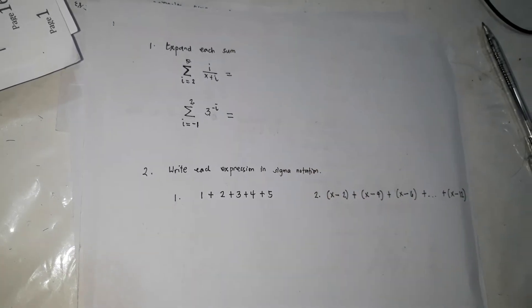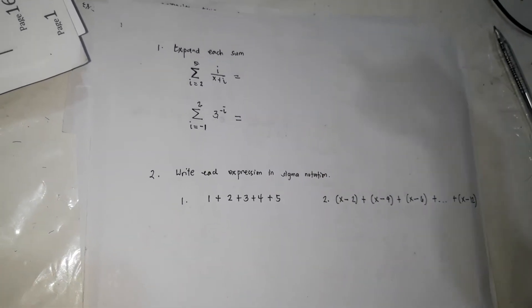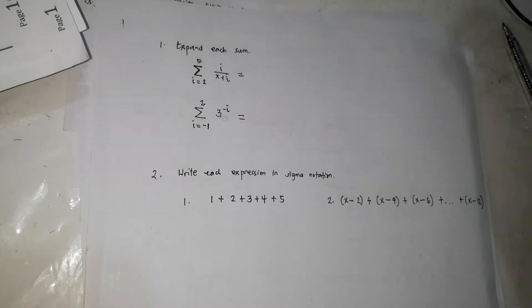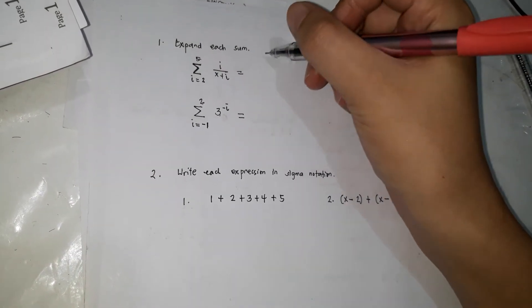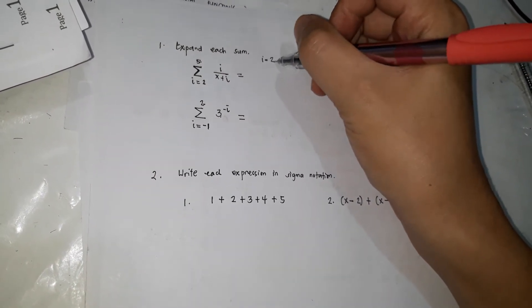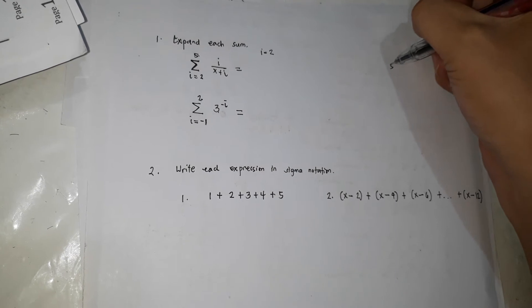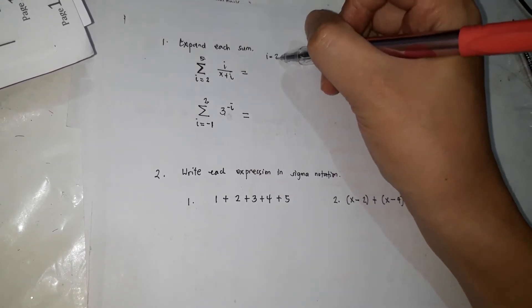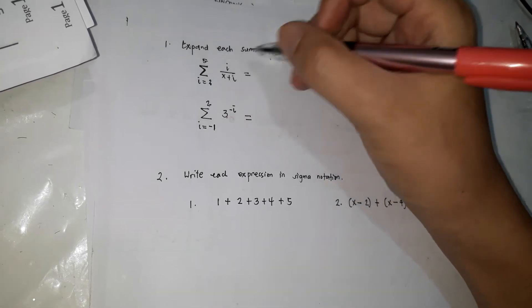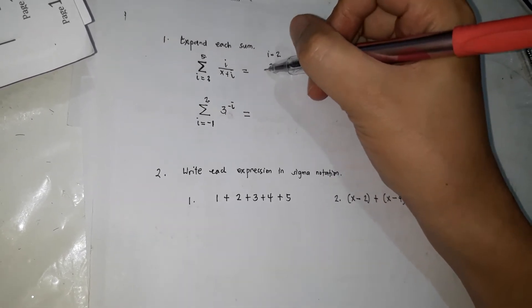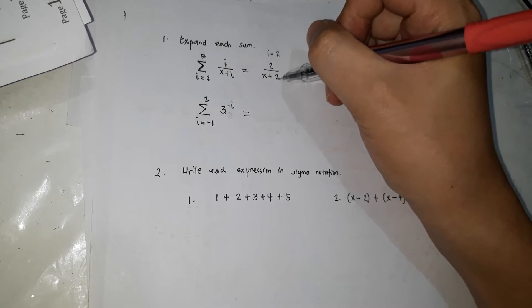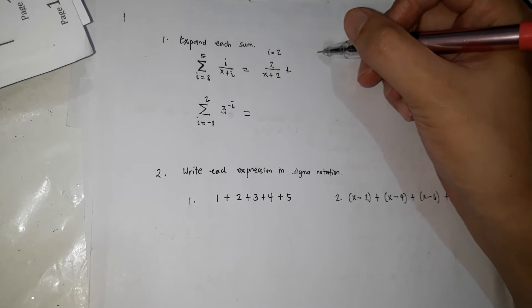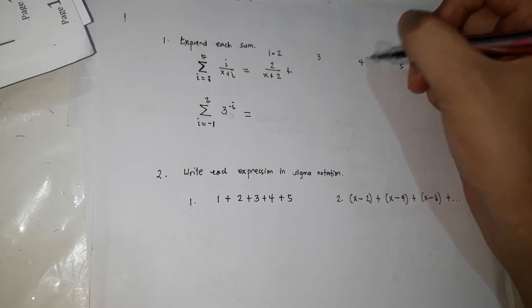So summation, ibig sabihin plus plus series. It is a series so therefore there's an addition. So first one, ang i mauna daw sa 2 hanggang sa 5. So 2, 3, 4, 5. So ang first natin, ang i, palitan mo lahat ng 2 kasi that's the first value of i.